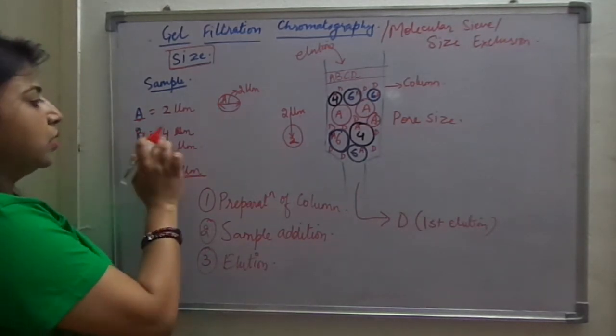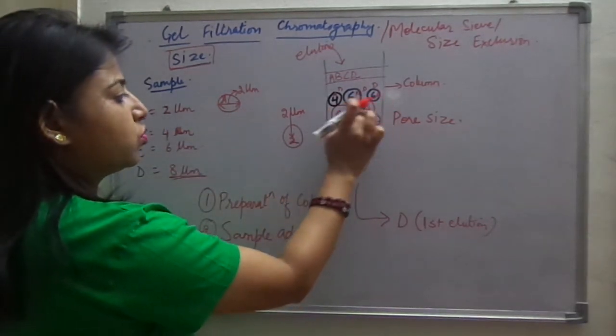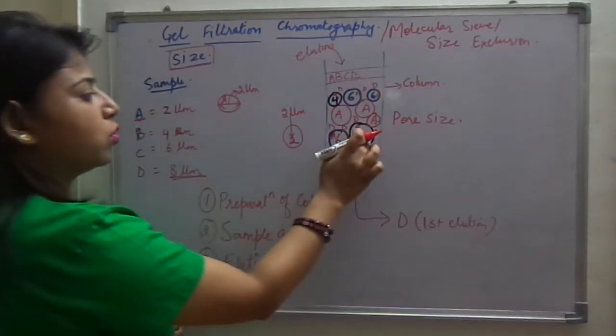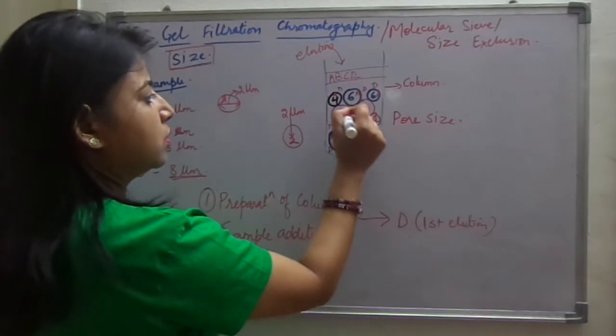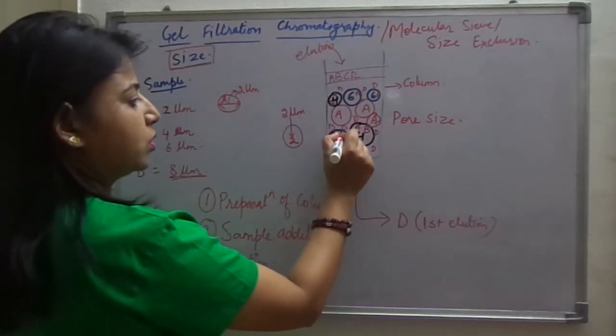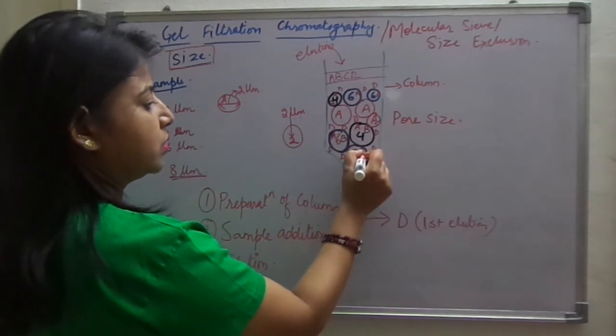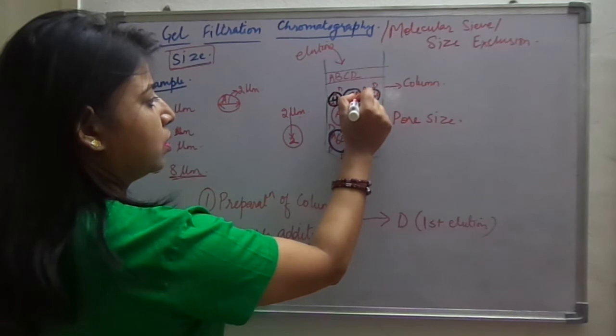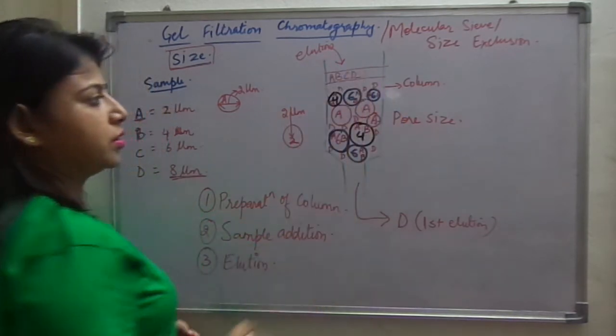Coming to B, B cannot come in these three beads which I have marked with red. B will go in the four micrometre beads, this is four micrometre, this is four micrometre. It can go in six micrometre beads, over here, here and over here it can go.